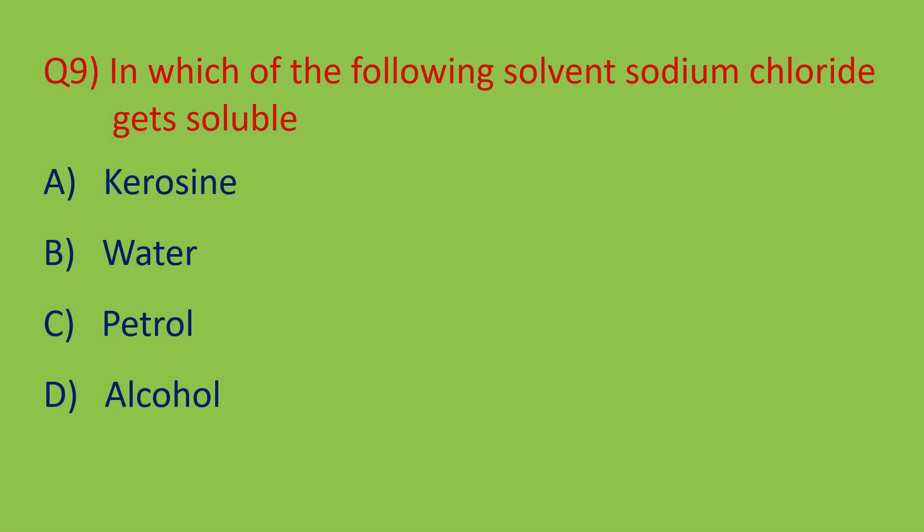Question number nine: in which of the following solvents does sodium chloride get soluble? Sodium chloride is an ionic compound. Ionic compounds dissolve in water but do not dissolve in organic solvents like kerosene, petrol, alcohol, ether, or benzene. So water is the right answer — option B.